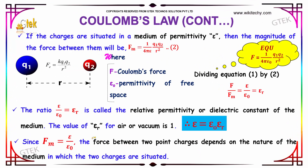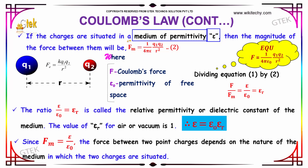Apart from this, if the charges are situated in a medium of permittivity epsilon — as opposed to vacuum or free space considered earlier — then the magnitude of the force between them will be Fm equal to 1 divided by 4 pi epsilon into Q1 Q2 divided by R square, where Fm indicates the Coulomb's force in that medium.